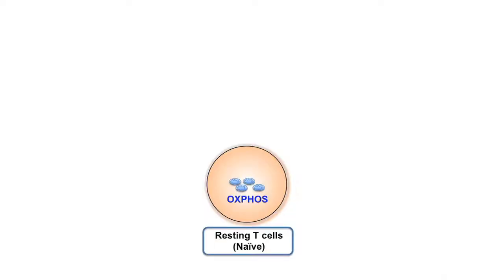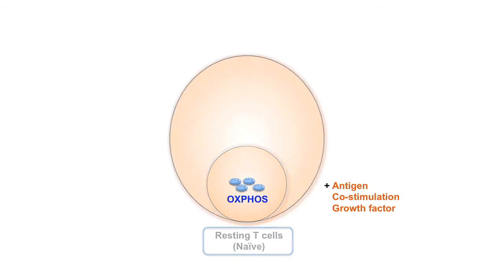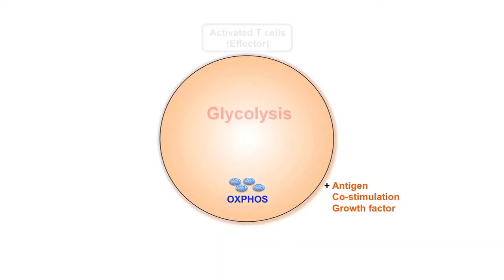These effector functions are important for clearing pathogens and tumors. The conventional view of cellular metabolism is one where non-proliferating cells, such as resting naive T-cells, rely on oxidative phosphorylation for energy. However, proliferating cells, such as activated T-cells or even cancer cells, engage aerobic glycolysis.